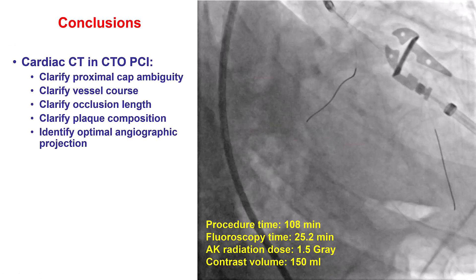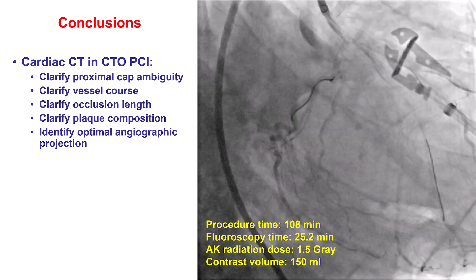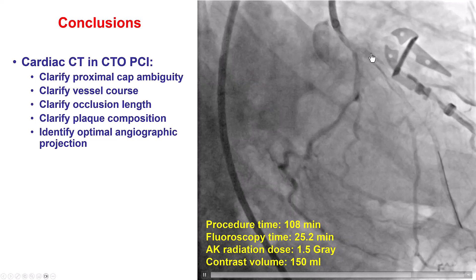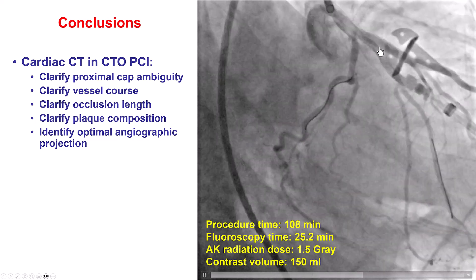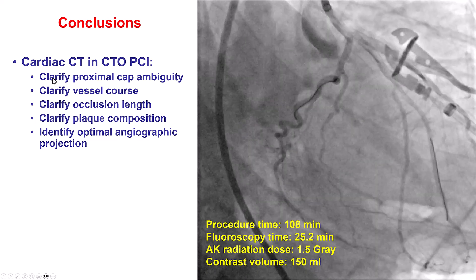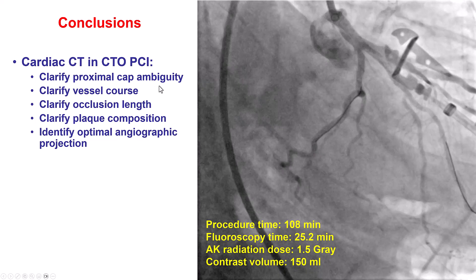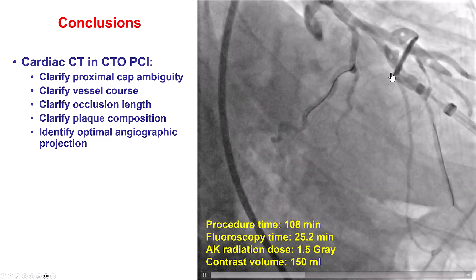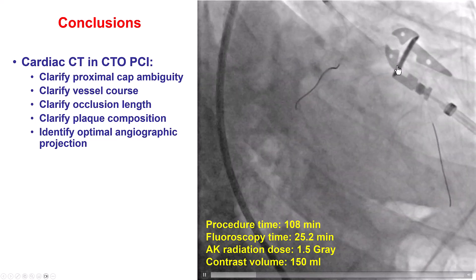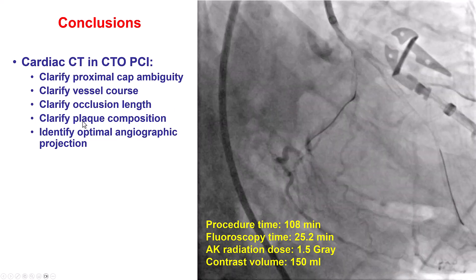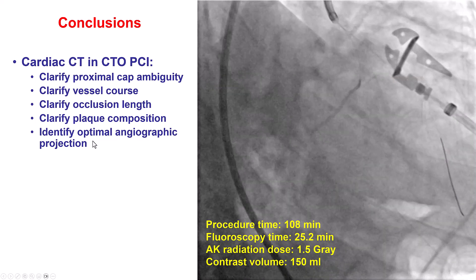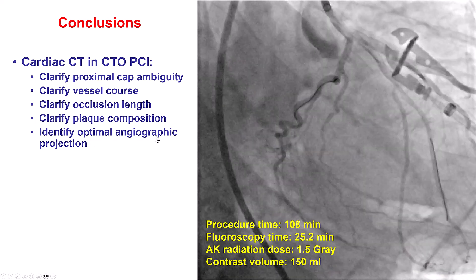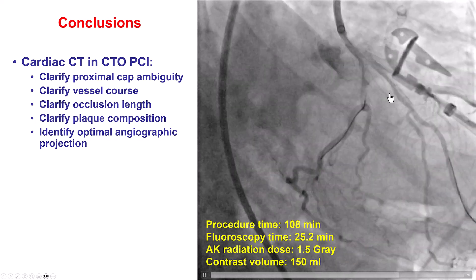In summary, this case illustrates how coronary CT can be very useful in performing and planning CTO PCI. In this case, we had an unclear proximal cap — we were not sure if it was that little Ramos branch that was connecting to the occluded vessel distally — and coronary CTA helped us clarify that yes, that was actually the target vessel. It helped clarify the course of the vessel, which was a straight occlusion without much tortuosity, and helped clarify the occlusion length at less than 10 millimeters. There was no calcium, favoring an antegrade wiring approach, and the CT also helped us identify an optimal angiographic projection to visualize the proximal cap and aid wiring into the distal true lumen.